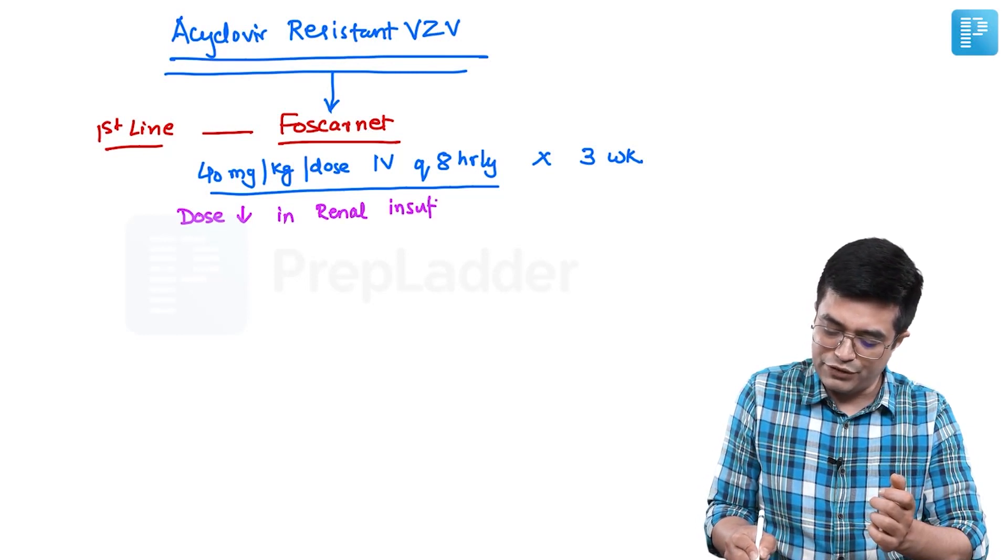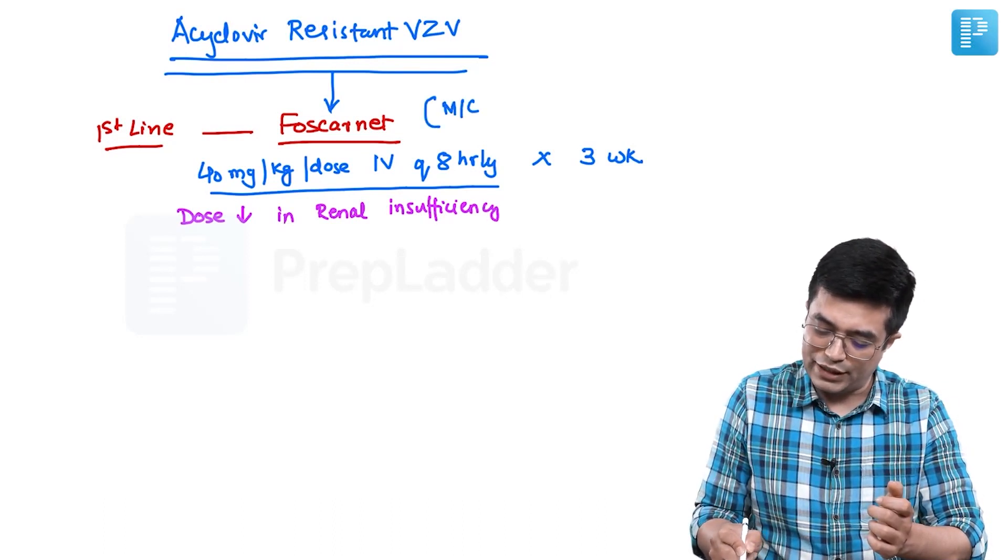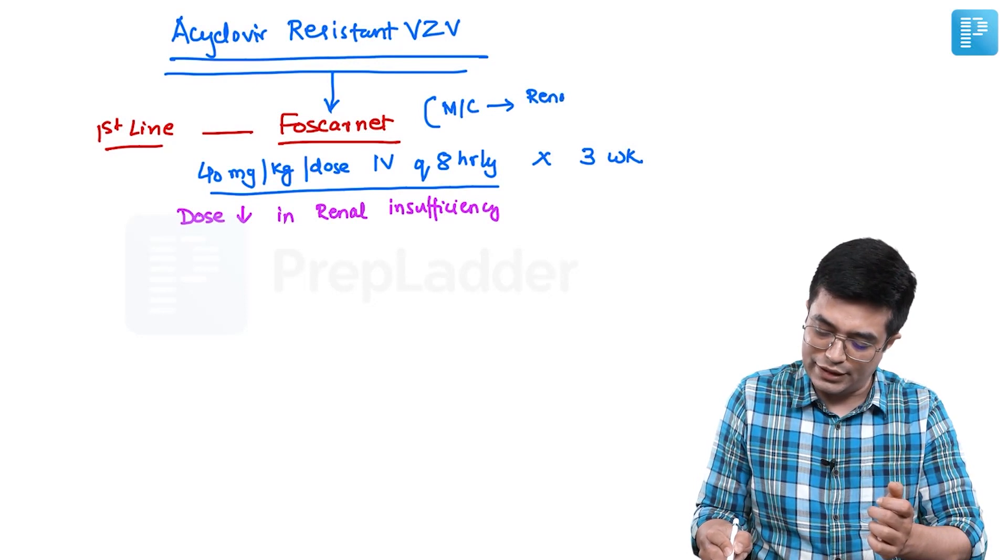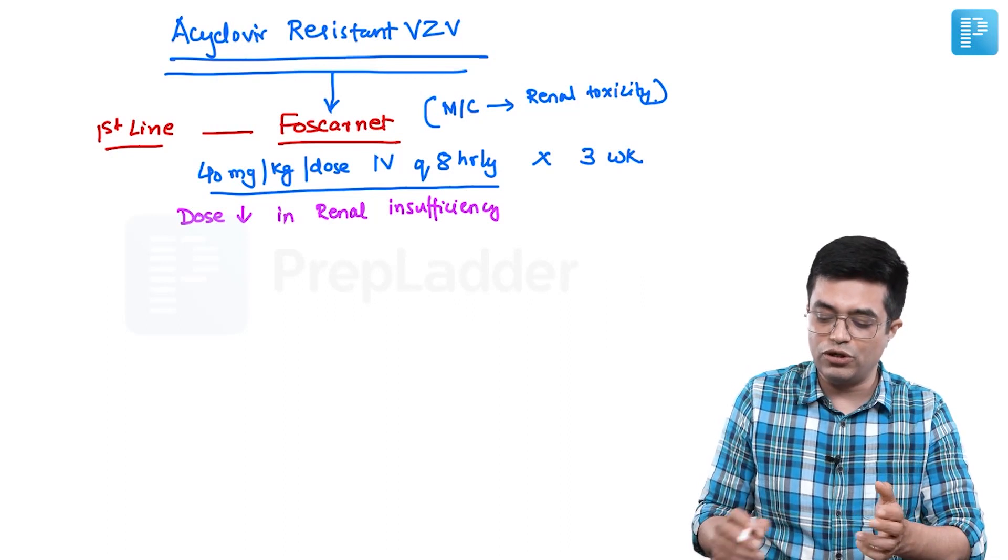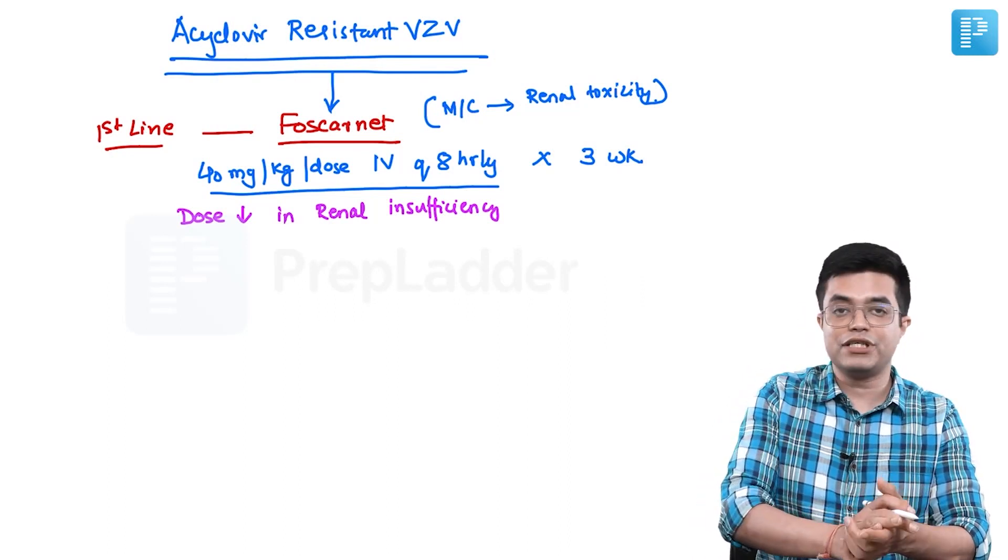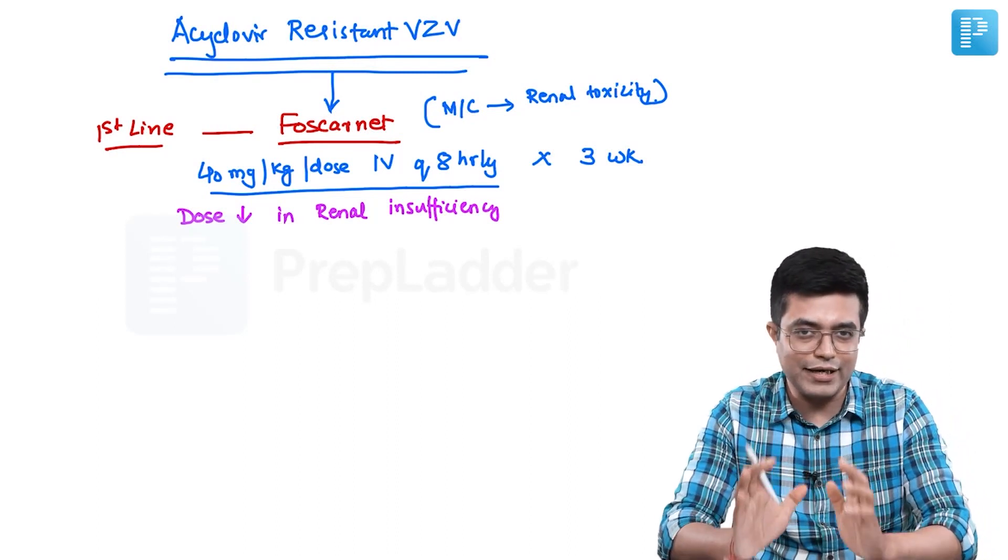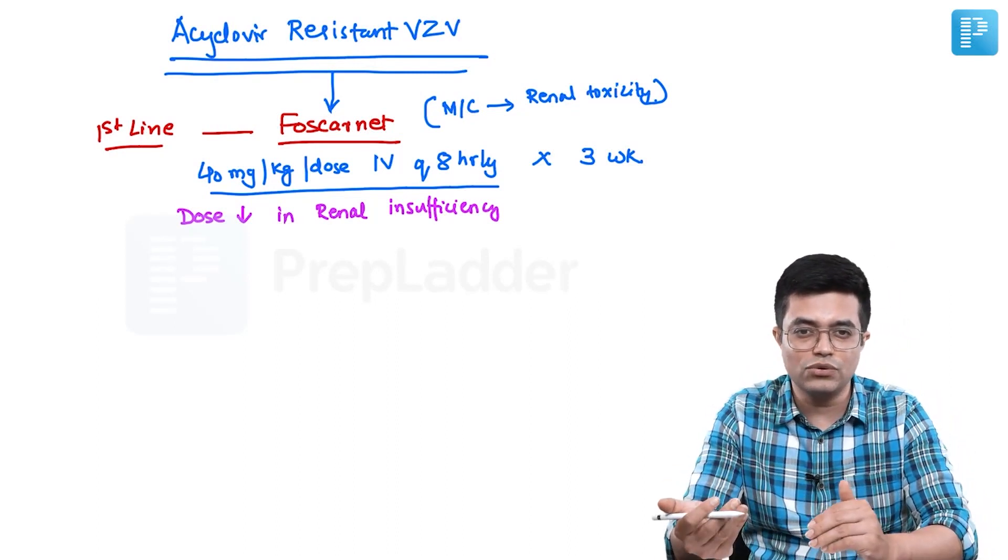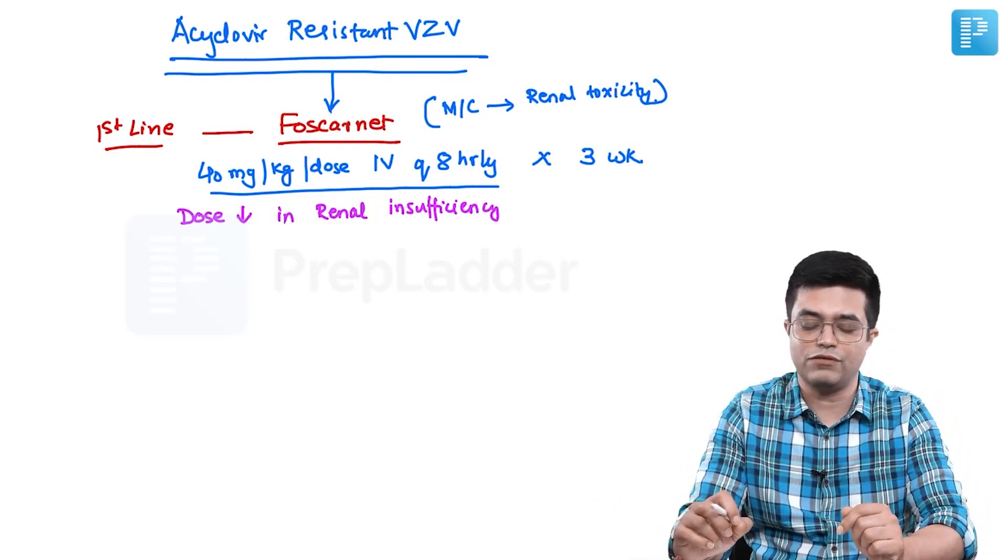In renal insufficiency, you need to reduce the dose because with Foscarnet, the most common side effect is renal toxicity. It is tubular toxicity, and in early patients with tubular toxicity, the renal toxicity that is happening is partially reversible. So early identification and reducing the dose can help in preventing long-term damage to the kidneys by the use of Foscarnet.